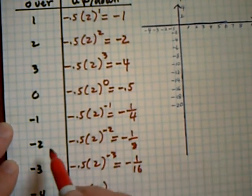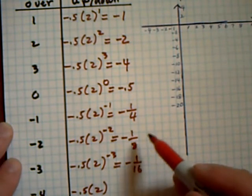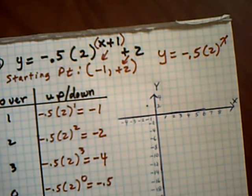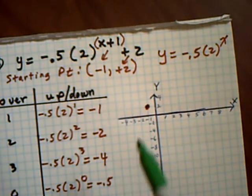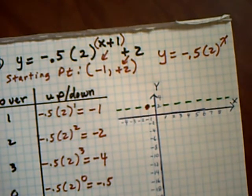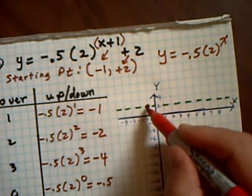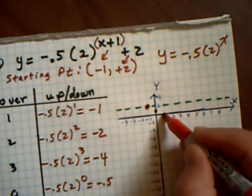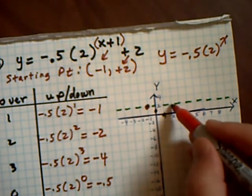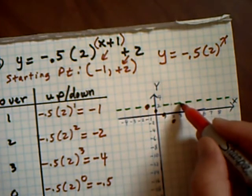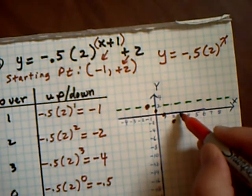So when going to the left, I'm going to be going down just a little bit. Let's put in our starting point, negative 1 and plus 2. Everything is going to start from here — this is my asymptote, this green dashed line. At the starting point: go over 1, go down 1. Go over 2, go down 2. Go over 3, go down 4. Go over 4, go down 8 — it's going to now start to go down faster. If I go over 0, it's going to go down a half.